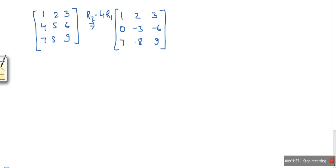Now we need to convert these two elements to 0. So in order to make this element 0, if you multiply first row by 7 and subtract that from this row, 7 minus 7 will be 0. So here I can write R3 minus 7R1. 1, 2, 3, 0, minus 3, minus 6, 0.